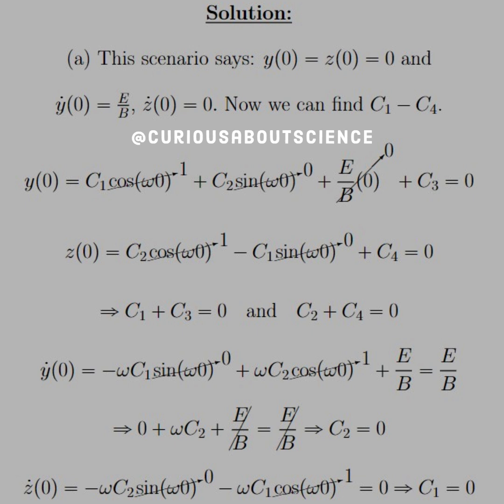And then since in this particular case, our y velocity at 0 was equal to e b, we have to set it equal to e b, and we see that we get some cancellations of that term, leaving us with c2 equals 0.